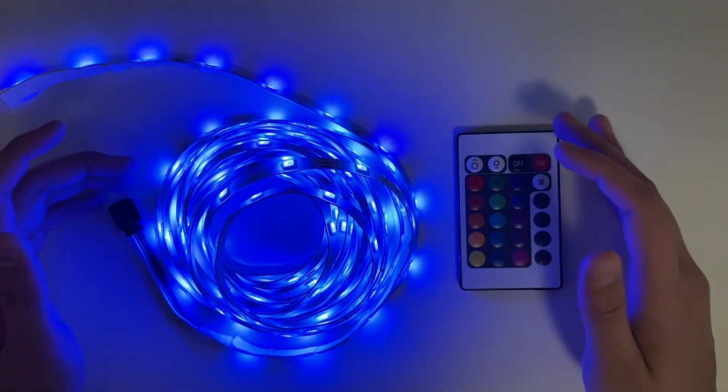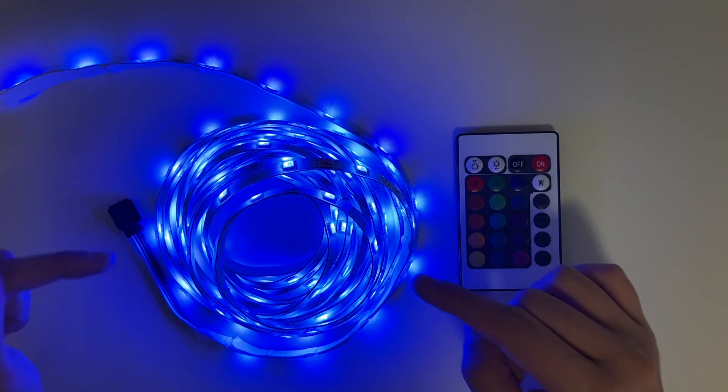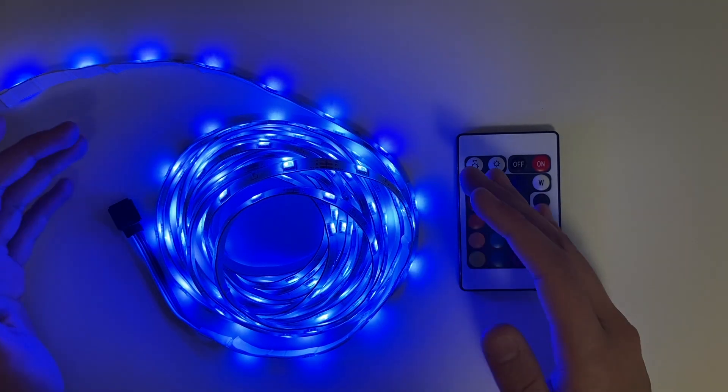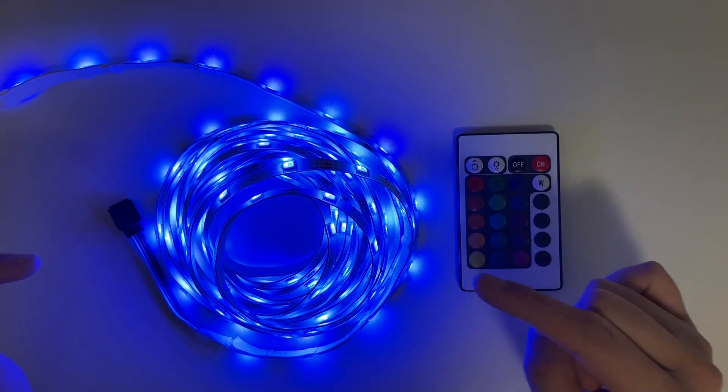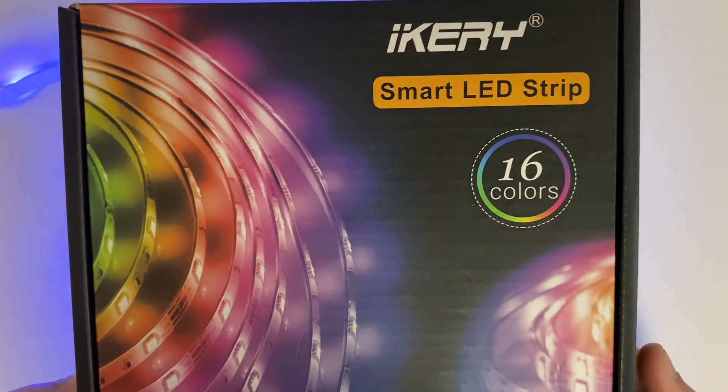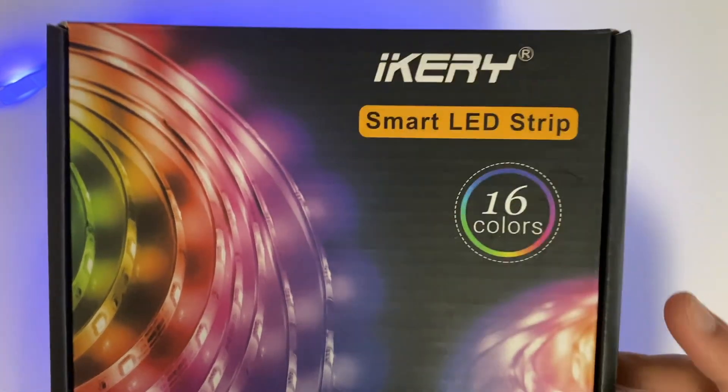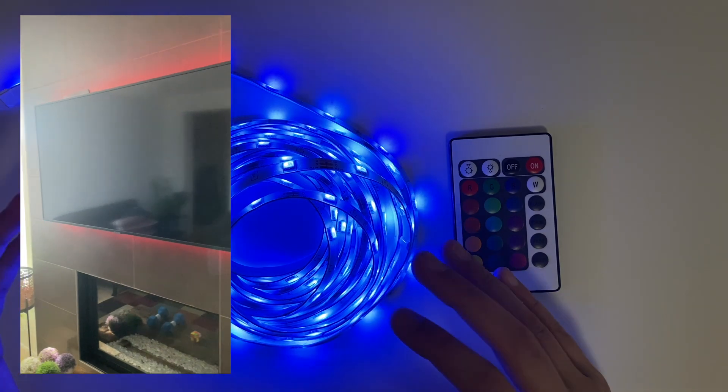Hey everybody and welcome back to Knowledge On Air. Look at this bright blue color, I love it, it's so nice. This is actually a smart LED strip and I got it from this box where I got two smart LED strips and it has up to 16 different colors.